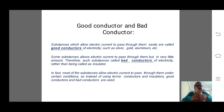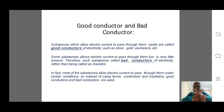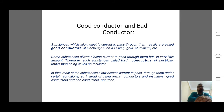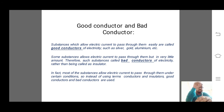Next we have good conductors and bad conductors. Substances which allow electric current to pass through them freely are called good conductors. Substances that allow very little current to pass through them are called bad conductors. When current passes not at all, that material is called an insulator. So there are three types: good conductors, bad conductors, and insulators.